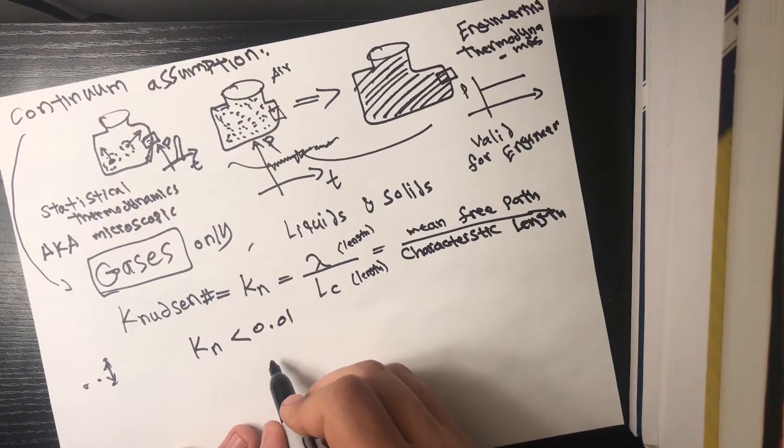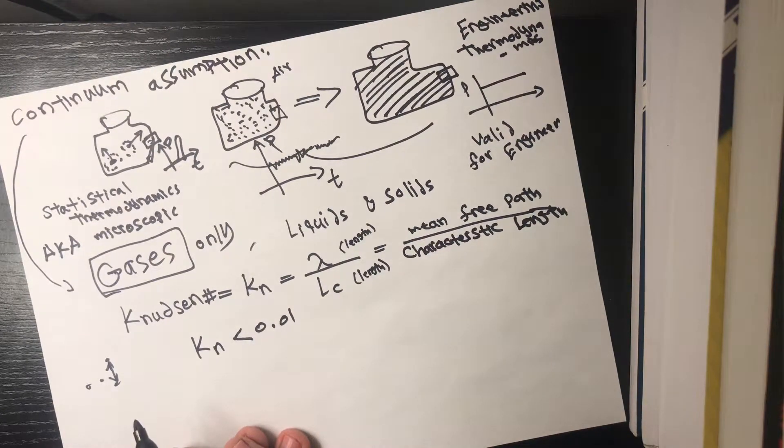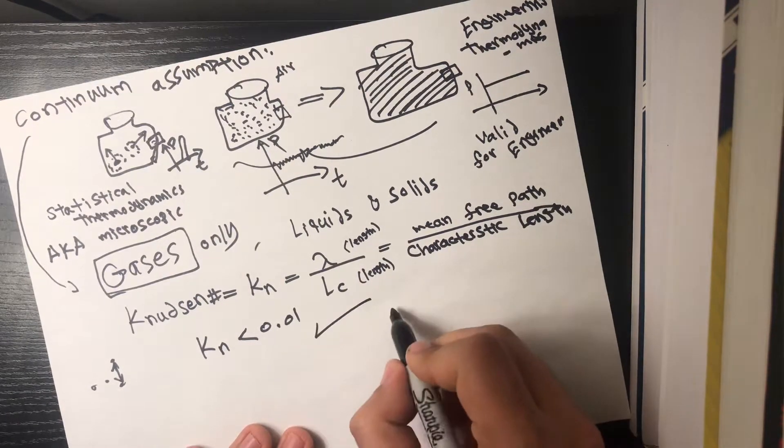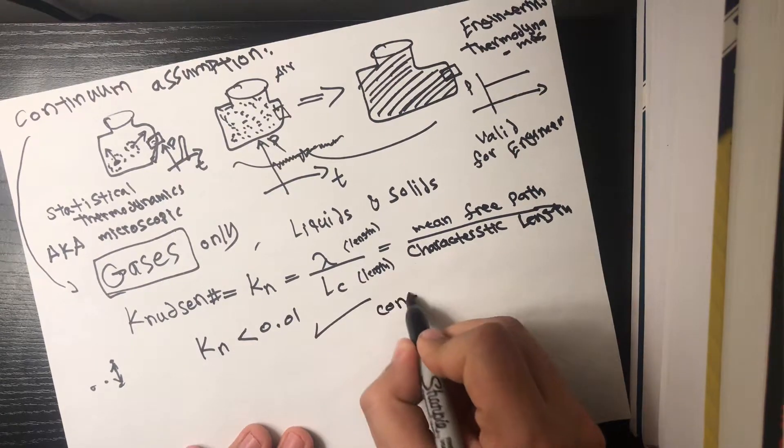If it's not smaller than this quantity right here, then your problem cannot be assumed to be continuum and you'd have to use statistical thermodynamics. But most of the time if this is true, or all of the time when this is true, then your problem is continuum valid.